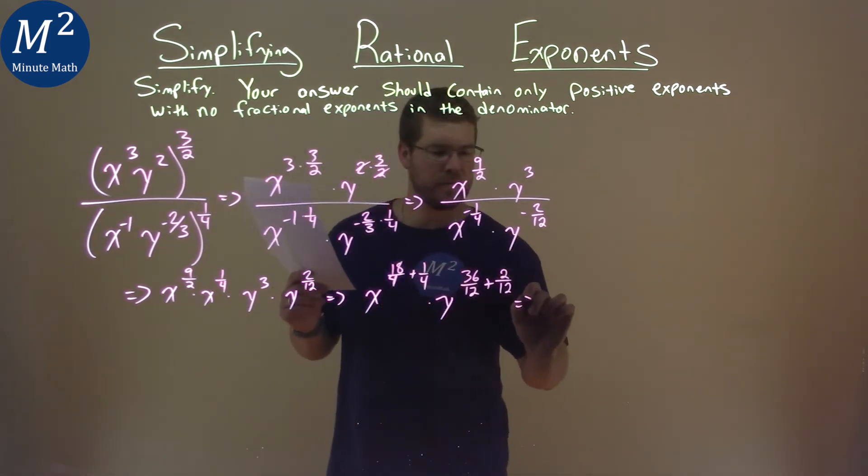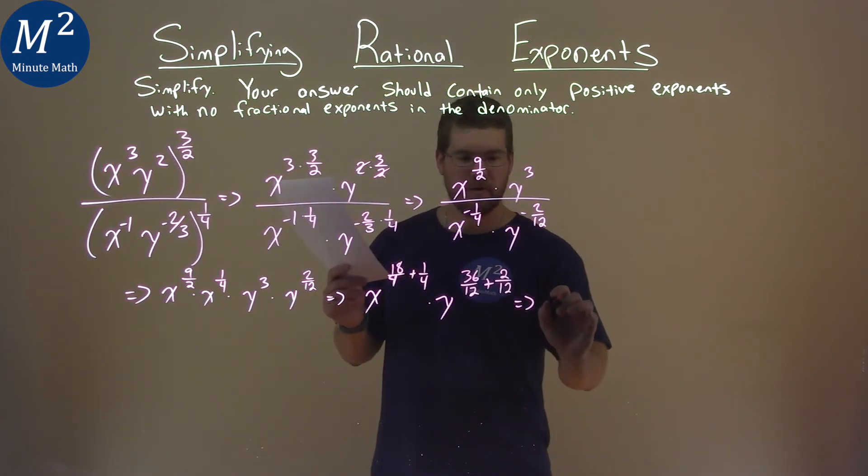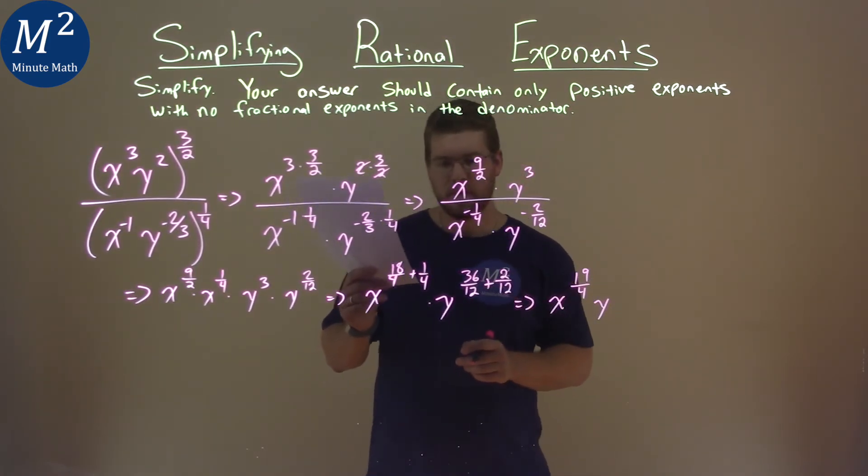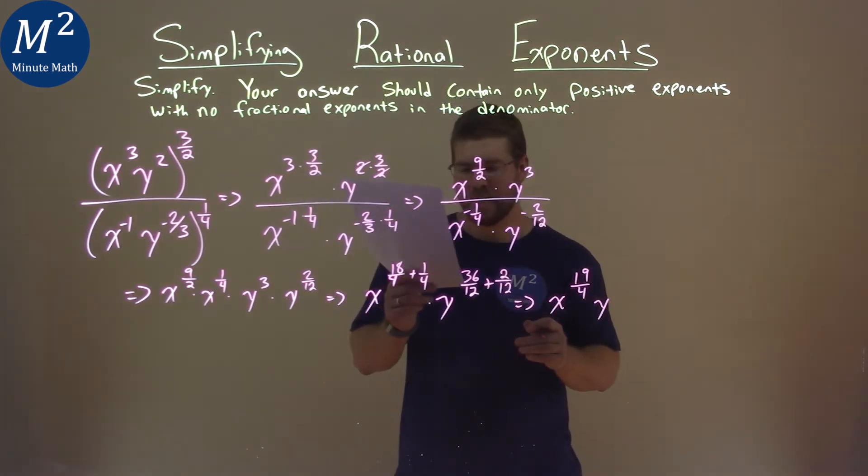Keep simplifying here. We have x to the, add the exponents, nineteen over four. And then we have y, thirty-sixth over twelve plus two-twelfths,